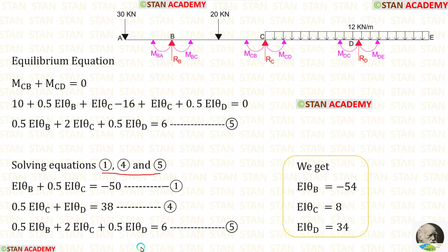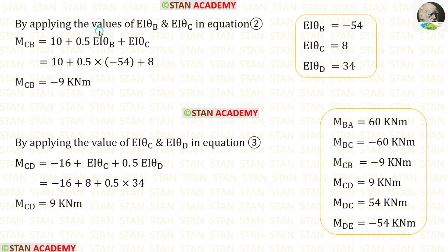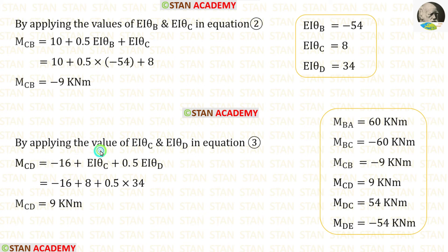We apply all values in the calculator to get the answers. If you do not know how to solve three equations using a calculator, see the description below — there is a link to a video. Using the solved values of EI·θB, EI·θC, and EI·θD, we substitute into equation 2 to get MCB and into equation 3 to get MCD.